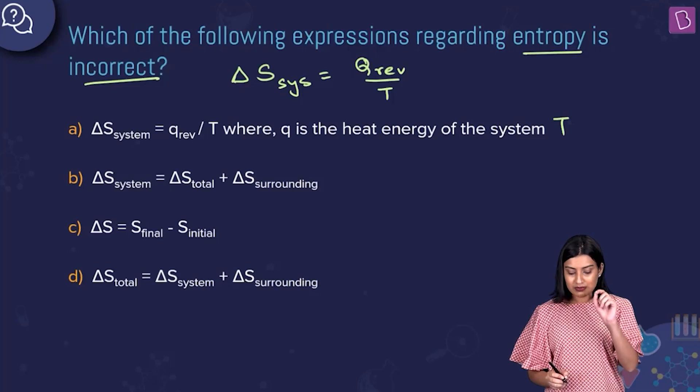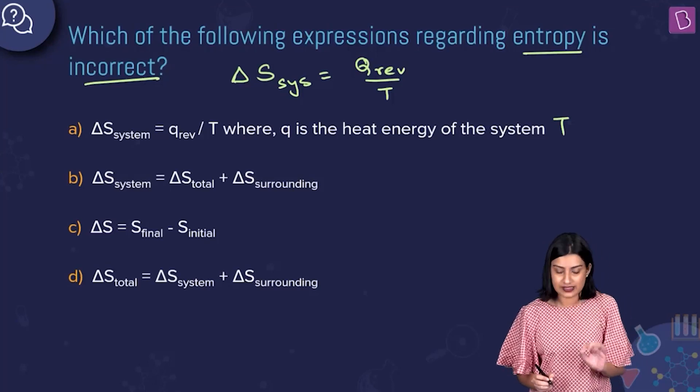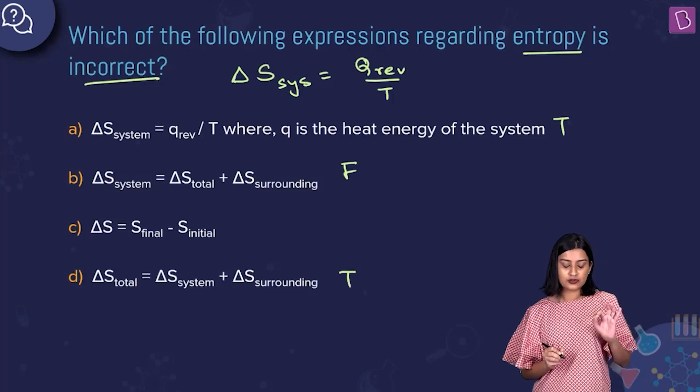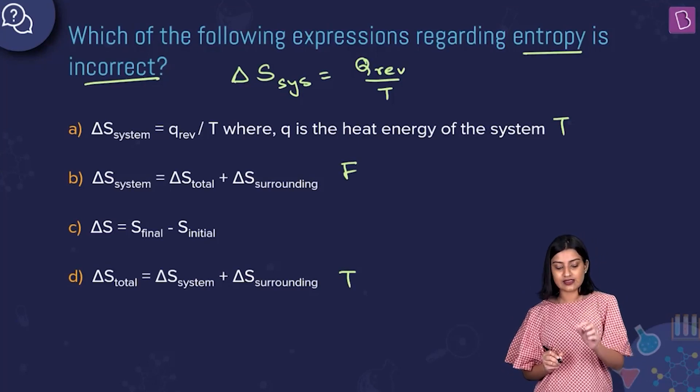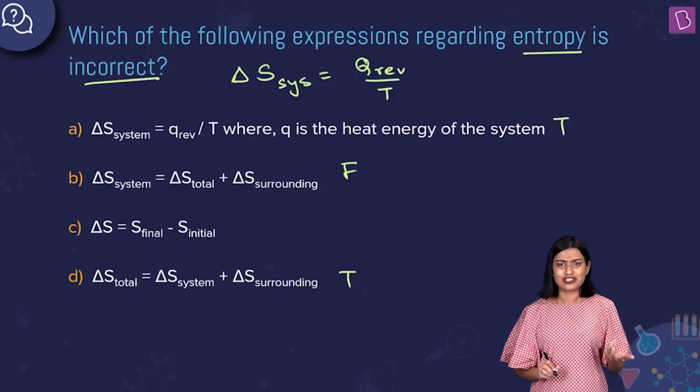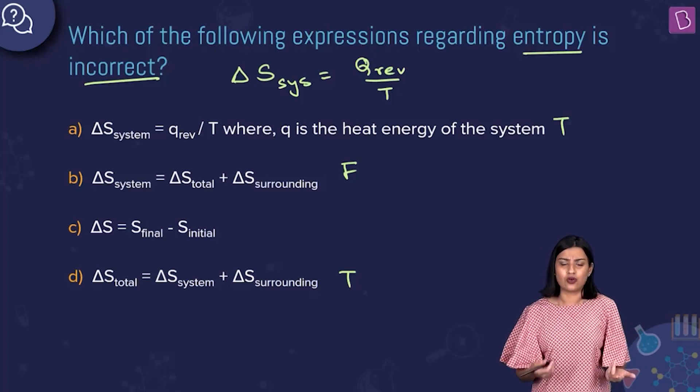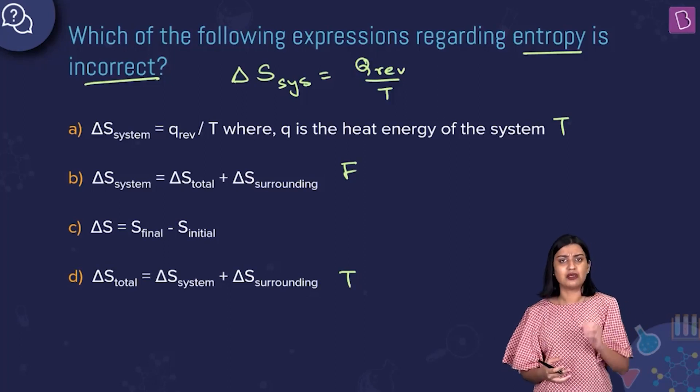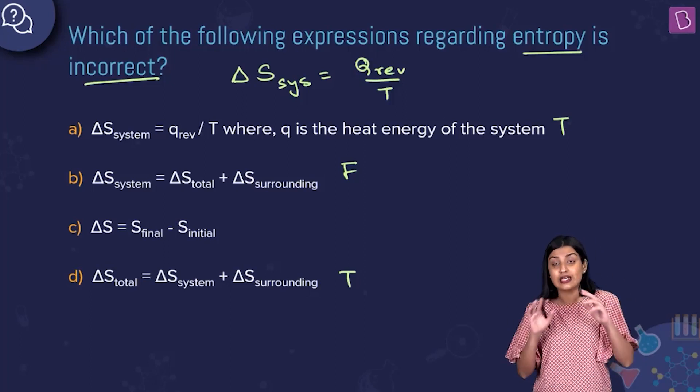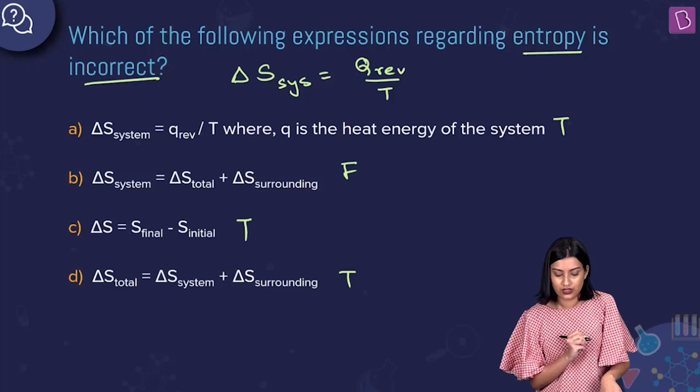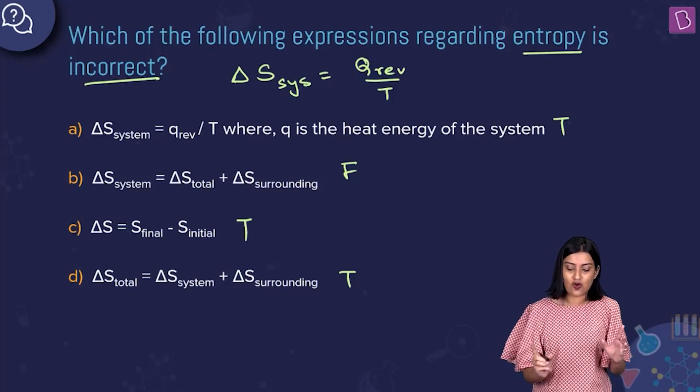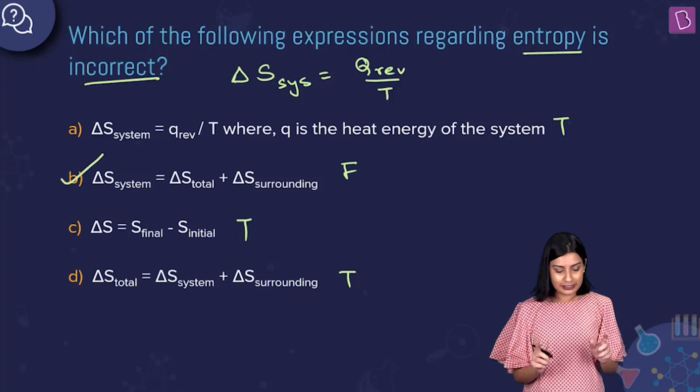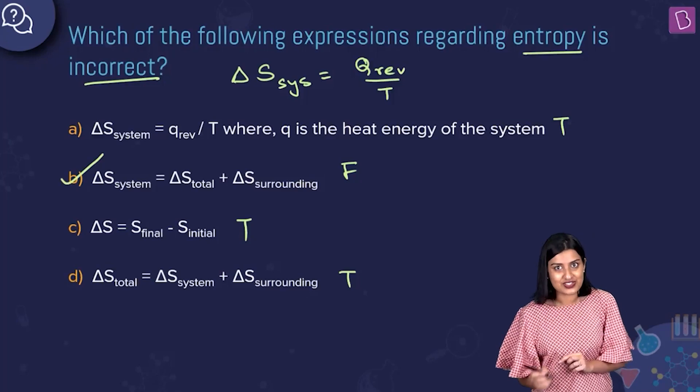Option B is saying delta S system is equal to delta S total plus delta S surrounding. This is false. And then option C is saying delta S is equal to S final minus S initial. Definitely true. As with anything that we talk about, like change in enthalpy, change in Gibbs free energy, anything is going to be final value minus initial value. This is how we calculate the delta of things. This is also true. Which means there's just one false statement or one false expression, which is option B. So option B is going to be the right answer to this question.